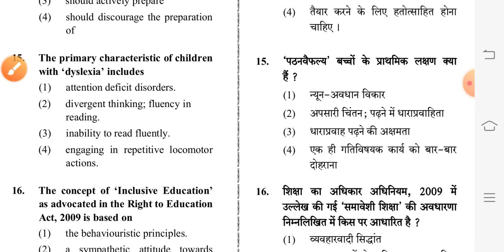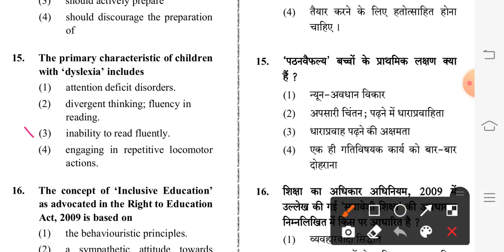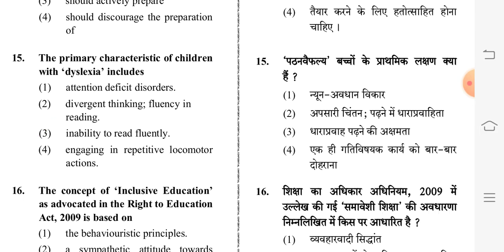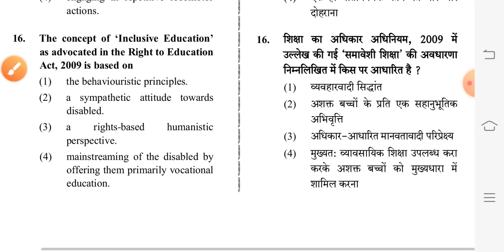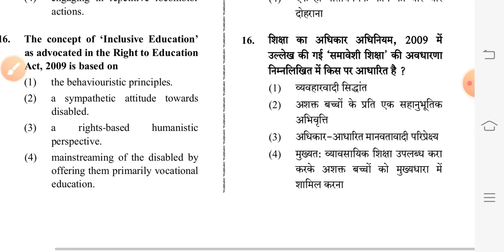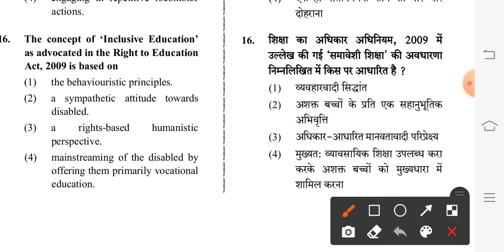Next question: the primary characteristic of children with dyslexia includes — third option is correct: inability to read fluently. The concept of inclusive education as advocated in the Right to Education Act 2009 is based on — third option: a rights-based, humanistic perspective.